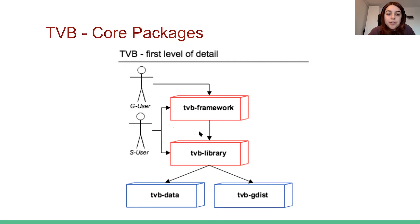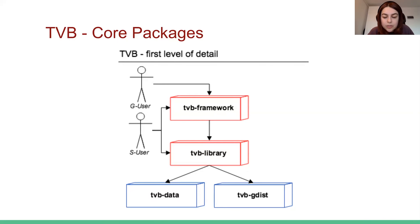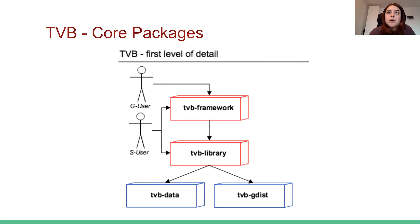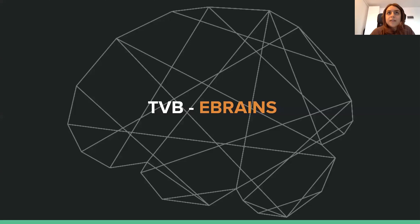On top of it, we have the TVB framework library, which also comes as a Python library but depends on the TVB library and adds a graphical user interface on top of it, together with storage solutions for the data that TVB generates. To conclude, TVB code comes in two forms: either as a lightweight Python library that can be used directly from a command line or a Jupyter notebook, or as a whole TVB framework where users can work directly with the web GUI and have data automatically stored.